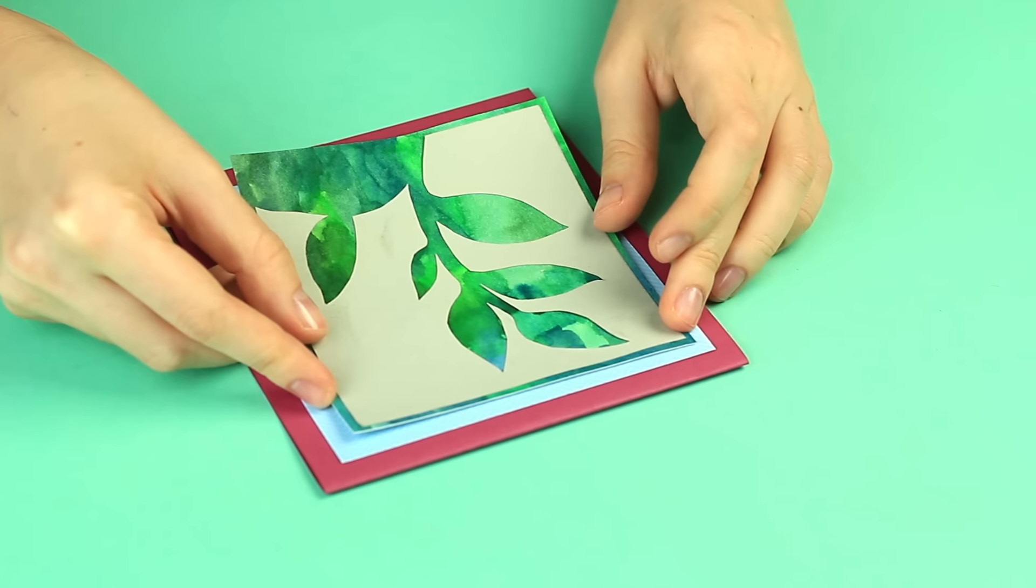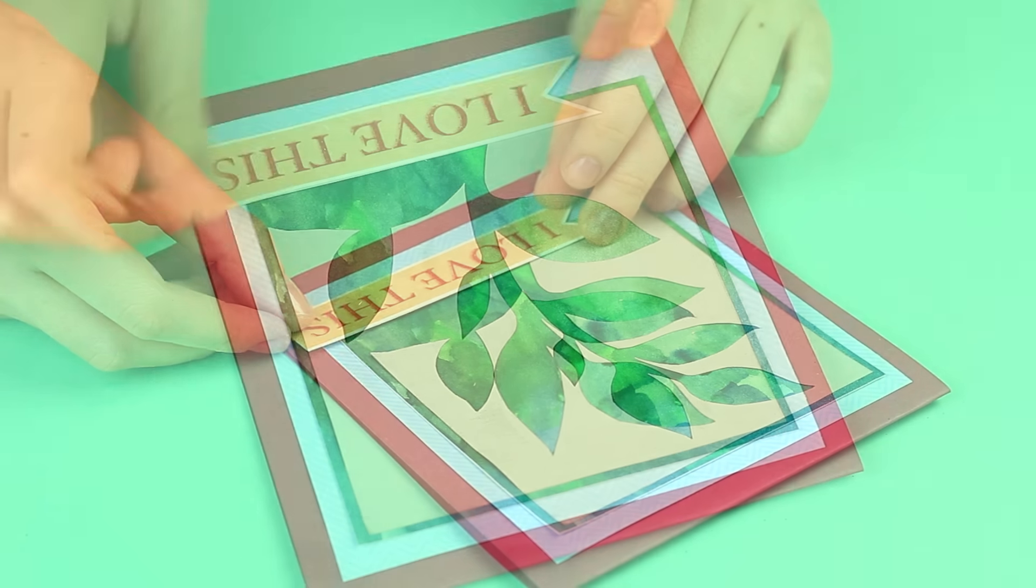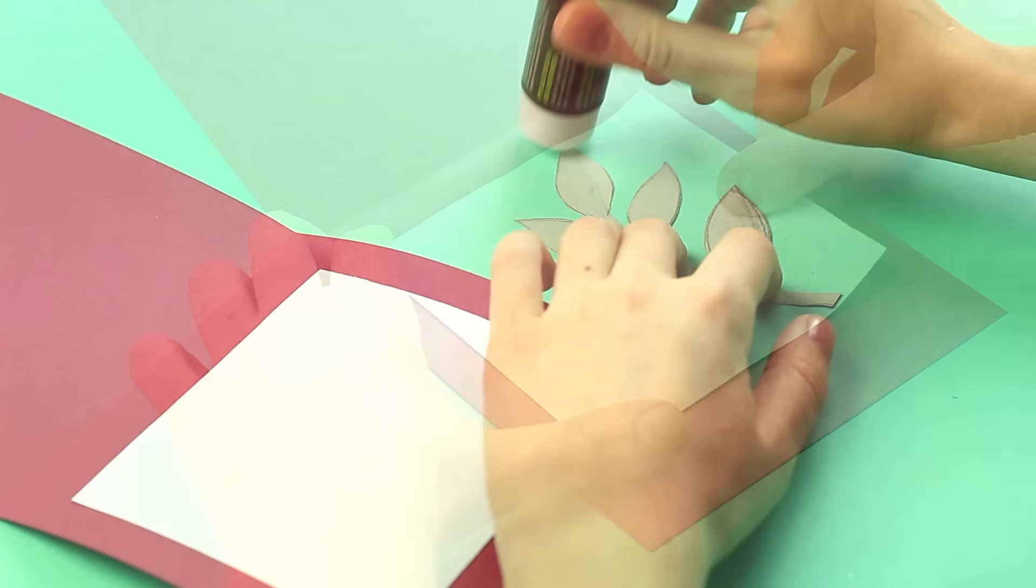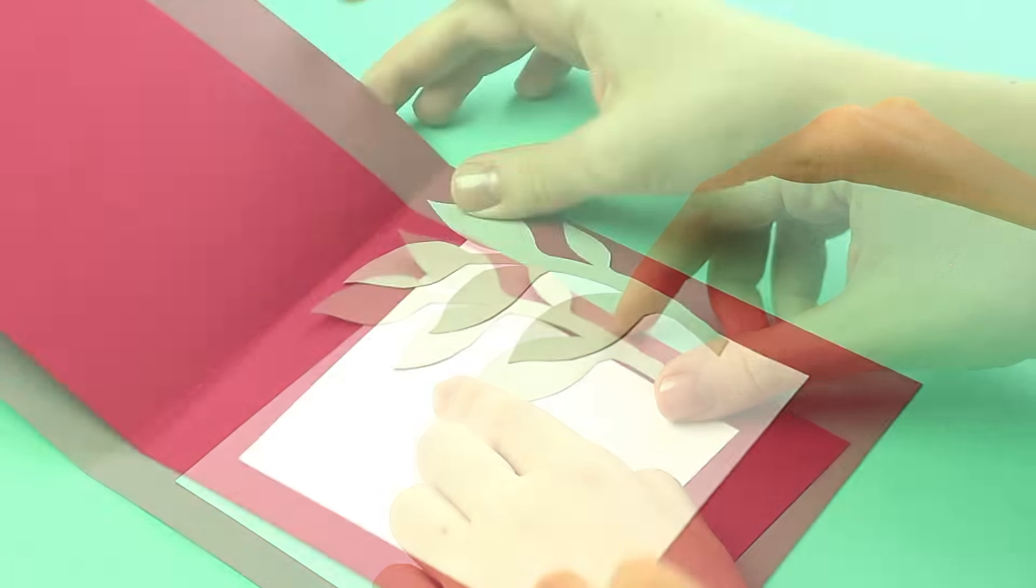Place the watercolor cut element on top. Add a tag. Put a wish note inside. Add a floral cutout. It will emphasize the overall design.